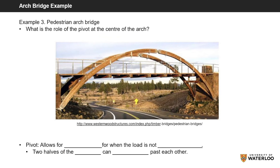For example 3, we will look at a pedestrian bridge. What do you think the pivot at the center does in terms of supporting the bridge? When pedestrians cross the bridge, the weight is not distributed evenly, so the load is not symmetric on both sides of the bridge.